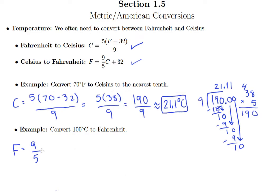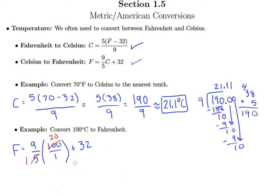We have 9 fifths times 100. I would suggest writing this as 100 over 1 because you're multiplying by the fraction 9 fifths — that can be really helpful. As we multiply 9 fifths by 100 over 1, we can pre-reduce: 5 divided by 5 is 1, and 100 divided by 5 is 20.